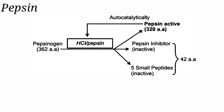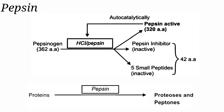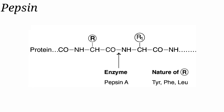Pepsin is a proteinase, a non-specific endopeptidase, and it hydrolyzes peptide bonds well inside the protein molecule, producing proteoses and peptones. Pepsin is active on peptide bonds which connect the carboxylic group of an aromatic amino acid like phenylalanine and tyrosine with the amino group of either a dicarboxylic or an aromatic amino acid.